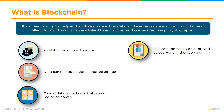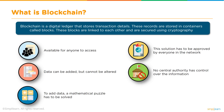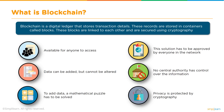Miners maintain the sanity of the network and in return receive a reward. The solution has to be approved by everyone in the network — the participants of the network are responsible for approving all transactions. There is no central authority which has control over the information, and that's why a blockchain network is a democratic network. The privacy of all users is maintained by cryptography and all transactions on the blockchain network are encrypted.